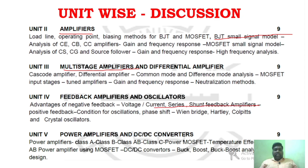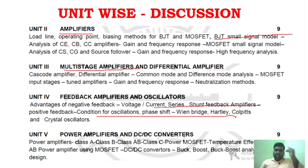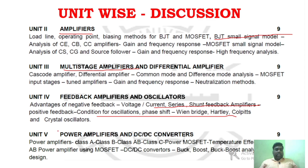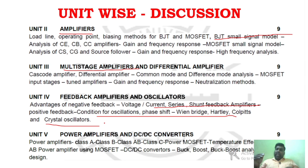In unit 4, you can see current series and voltage shunt feedback amplifiers. Similarly, in unit 4 you have more than three oscillators — Wien Bridge, Hartley, and crystal oscillator. These topics are very important for the exam. Make sure you are prepared enough to face the question paper.